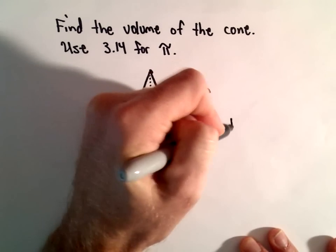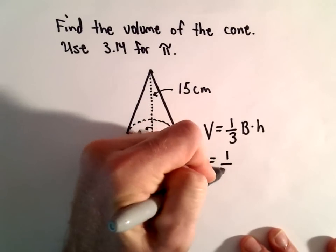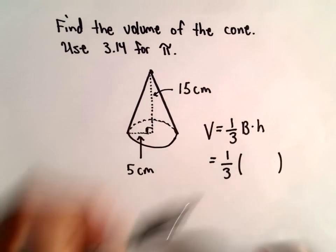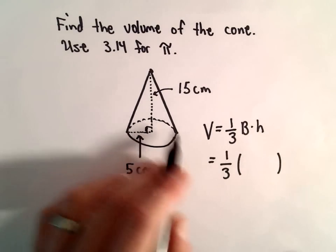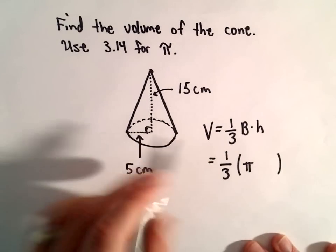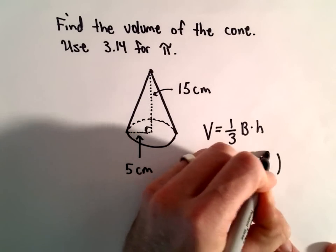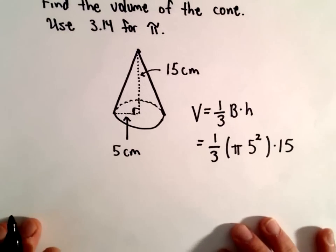So the volume is one-third multiplied by the base times the height. Well, the base in this case is a circle, so recall to find the area of a circle, we use pi times the radius, which in this case is 5 squared, and then we multiply that by the height, which is 15.